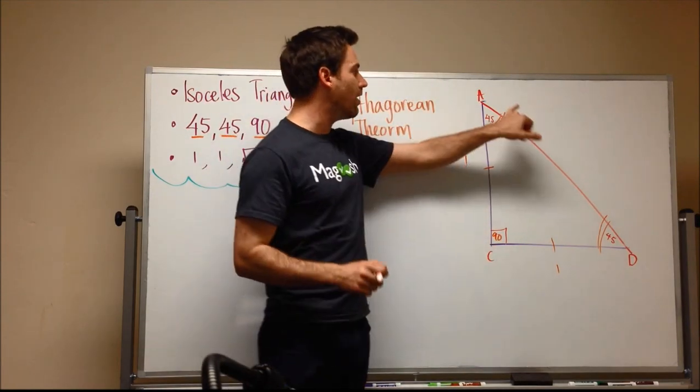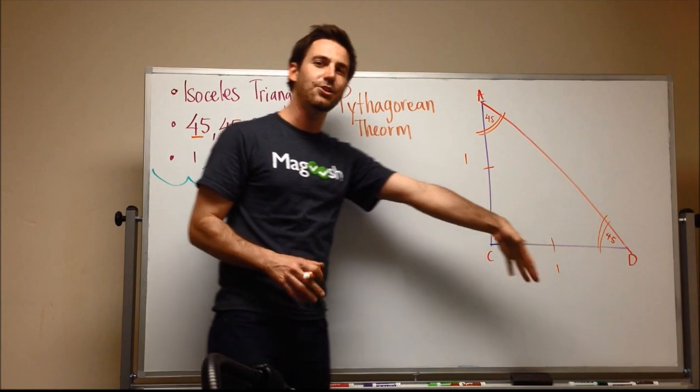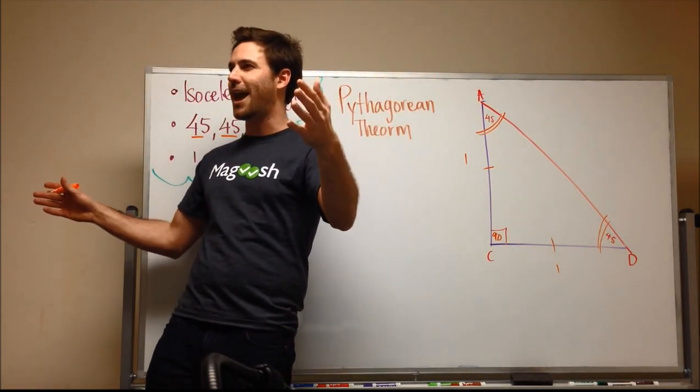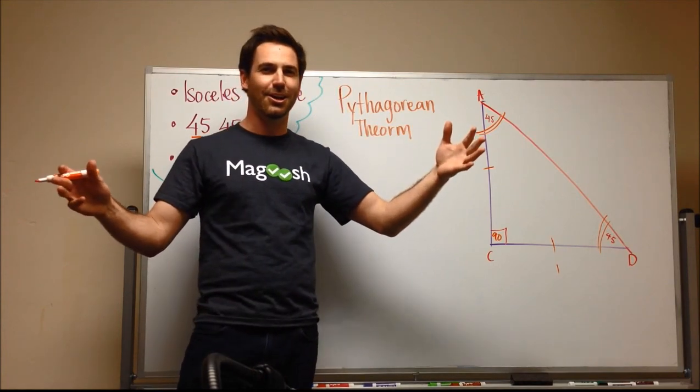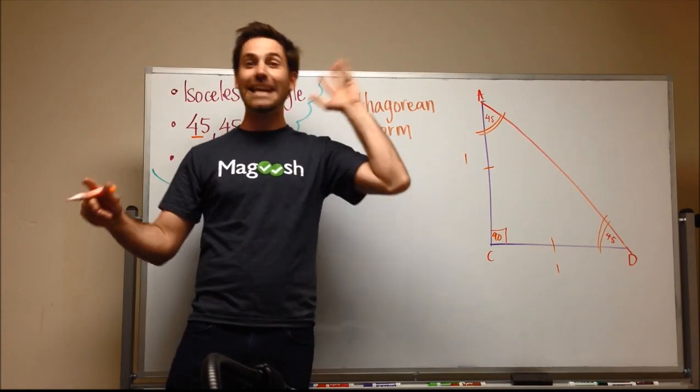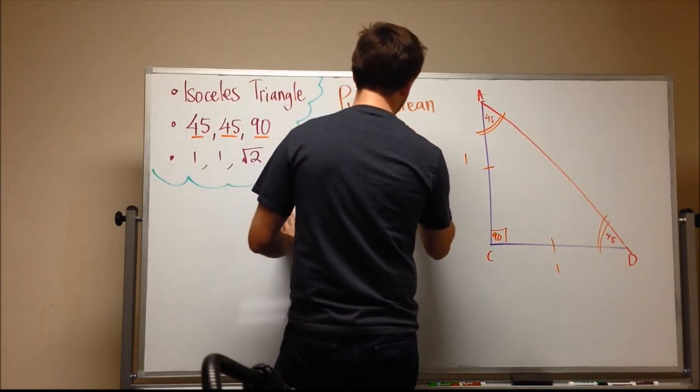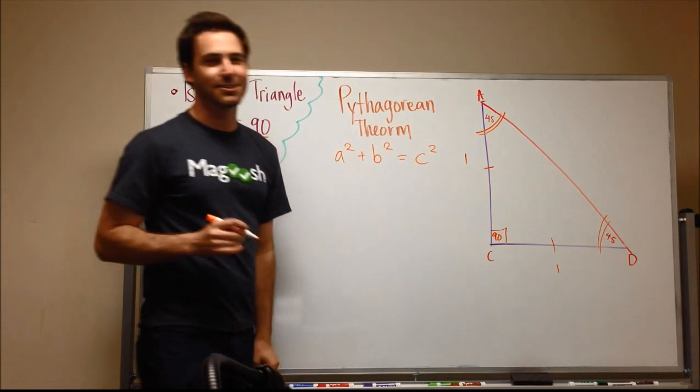And we can figure out the side AD using the Pythagorean theorem. Does anybody remember the Pythagorean theorem? I know somebody out there does. I can hear you. Oh, yes. Yes. A squared plus B squared equals C squared.